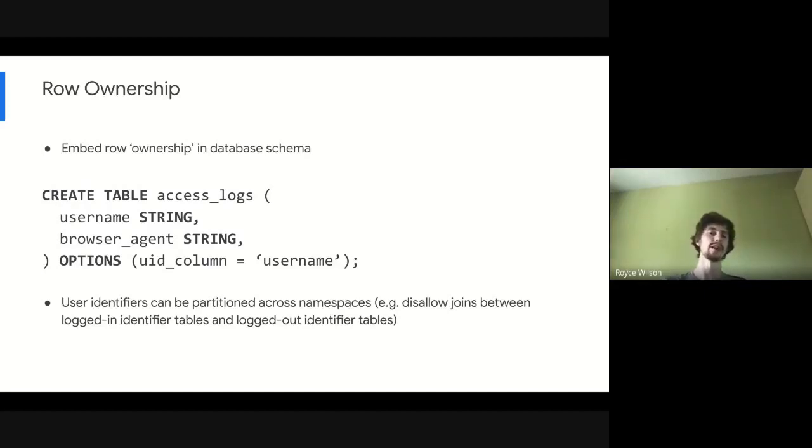One notable extension that you might want to consider is we can partition user identifiers across namespaces. So maybe we want to differentiate between a logged in identifier like a username and a logged out identifier such as a cookie token. And we don't want to allow joins between those identifier spaces because they're illogical. So this is an additional thing that maybe we can introduce in our rewriter layer that does this additional validation and enforcement to make it easy for the analyst to write queries by default that do the right thing.